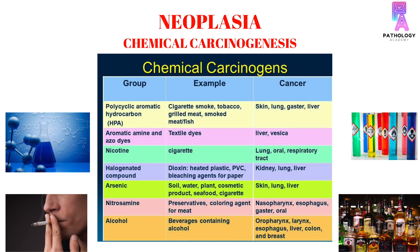Chemical carcinogenesis is caused by agents known as chemical carcinogens. Examples include polycyclic aromatic hydrocarbons, which cause skin, lung, gastric, and liver cancer; aromatic amines and azo dyes, exposure to which can lead to liver and bladder cancer; nicotine, which can cause lung cancer, oral cancer, or other forms of respiratory tract cancer; and halogenated compounds, which can lead to kidney cancer, lung cancer, and liver cancer. Exposure to arsenic can cause skin, lung, and liver cancer.